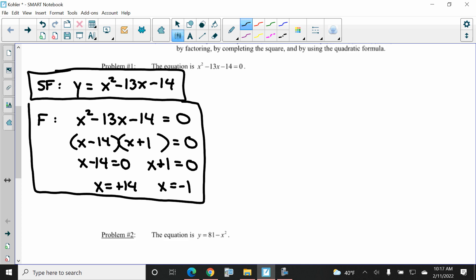I'll do the quadratic formula next. It's completely your choice on how you go. But the quadratic formula, I need to know what's A, what's B, what's C. Well, A is 1, B is negative 13, C is negative 14.